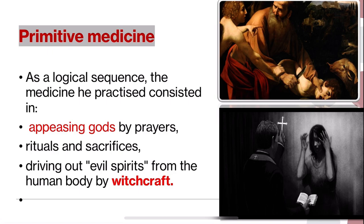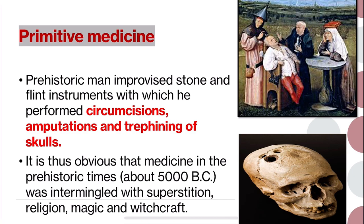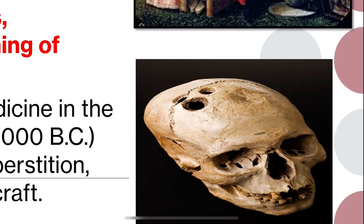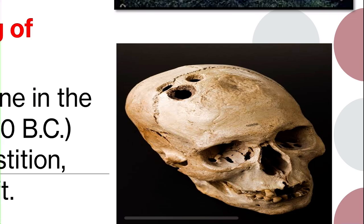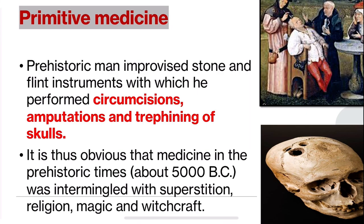They had no knowledge about scientific medicine; everything was blamed upon religion or superstition. The prehistoric man improvised stone and flint instruments and performed circumcisions, amputations and trepanning of the skulls. He carved stone as a knife and bored holes into the skull when intracranial pressure was raised. It is now obvious that medicine in prehistoric times, about 5000 BC, was intermingled with superstition, magic, witchcraft and religion. Diseases such as leprosy were interpreted as punishment for past sins.